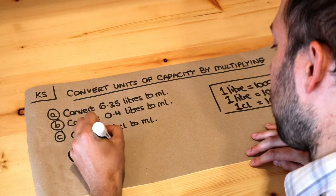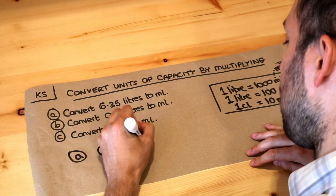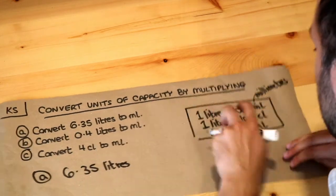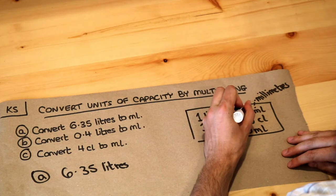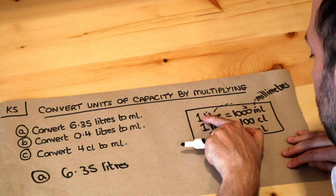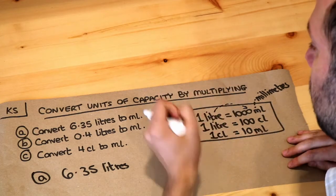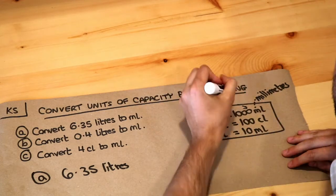We want 6.35 liters and we want to convert that to milliliters. Now we're going from liters to milliliters, so let's look here. Liters to milliliters, you can see the number is getting a thousand times bigger. So always check whether your numbers should be getting bigger or should be getting smaller when you convert between units.